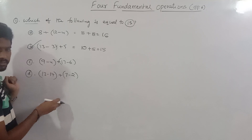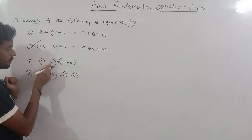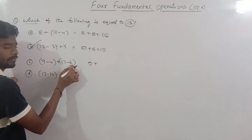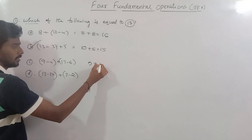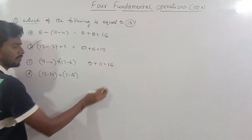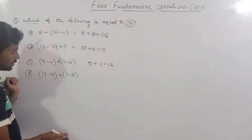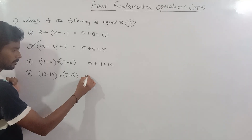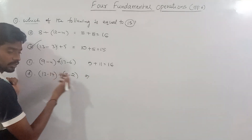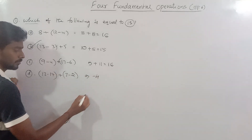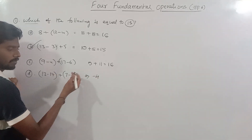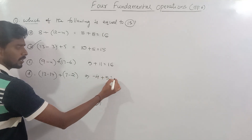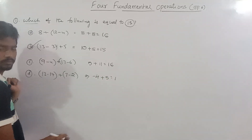If you want to check: 9 minus 4 equals 5; 17 minus 6 equals 11; 5 plus 11 equals 16; 13 plus 7 equals 17; 13 minus 7 equals minus 4; 7 plus 2 equals 5; 5 plus 4 equals 1.